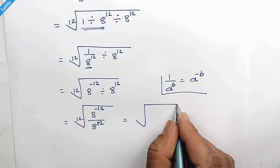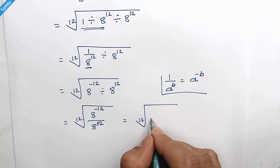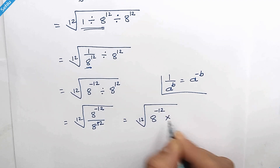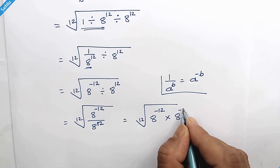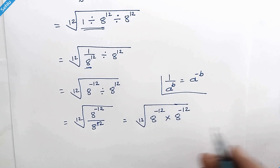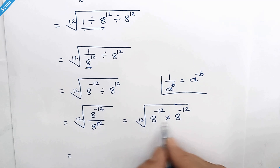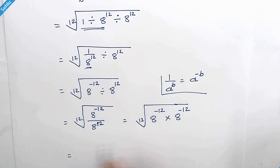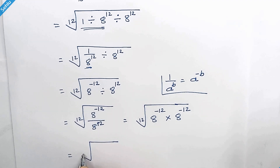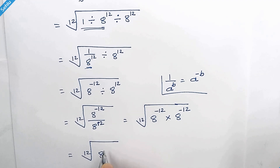This will be written as the 12th root of 8 to the power negative 12 multiplied by 8 to the power negative 12, which simplifies to the 12th root of 8 to the power negative 24.